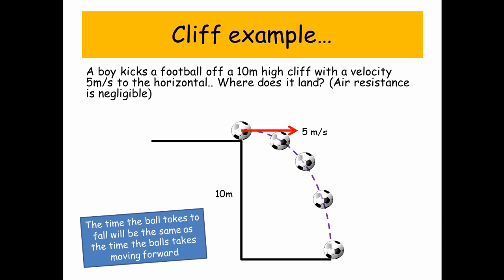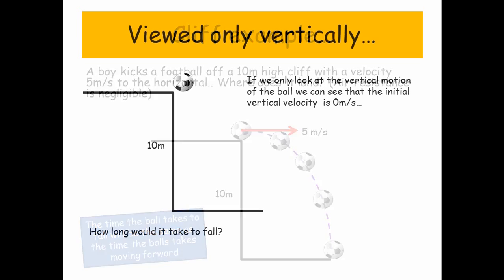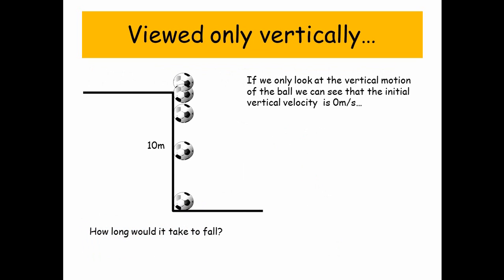And the key to solving this, the time the ball takes to fall is going to be the same as the time for the ball moving forwards. Viewing this only vertically, if we look at the vertical motion of the ball, we can see that the initial vertical velocity is actually 0 meters per second. So how long will it take for the ball to fall?